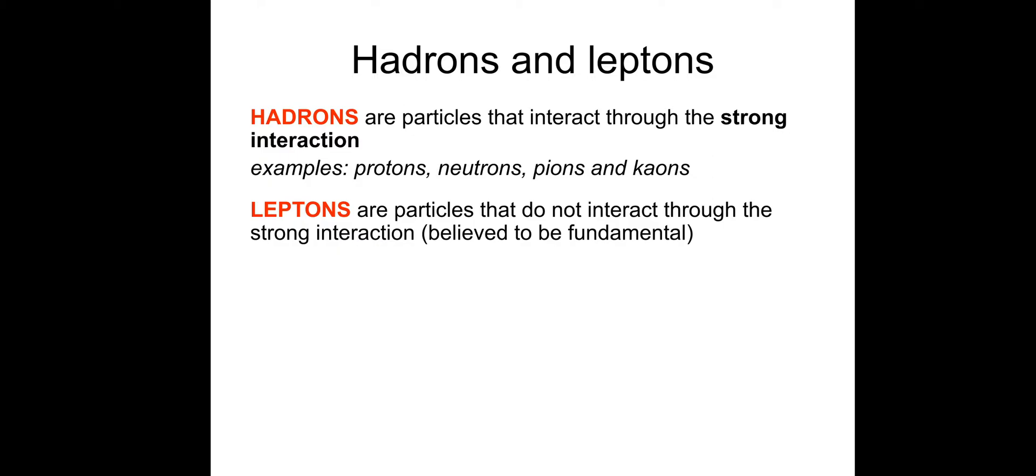Leptons are particles that do not interact through the strong interaction. They are believed to be fundamental. Some examples involve electrons, positrons, muons and neutrinos. A muon is just a heavy electron, 207 times heavier. Neutrinos are basically zero mass, no charge particles that are very hard to detect. We'll go into more detail about them later.